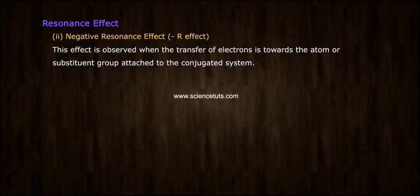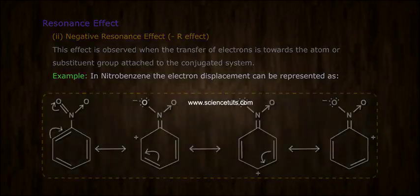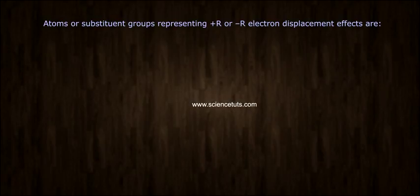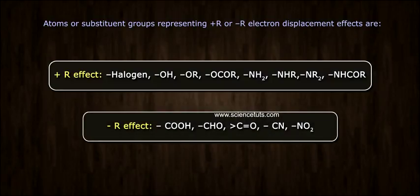In nitrobenzene, the electron displacement can be used in the molecule by the atom or substituent group attached to the conjugated system. Atoms or substituent groups representing positive R or negative R. Electron displacement effect: Positive R effect includes halogen, OH, OR, OCOR, NH2, NHR, NR2, NHCOR. Negative R effect includes COOH, CHO, C=O, CN, NO2.